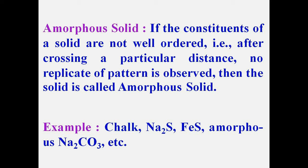What is an amorphous solid? If the constituents of a solid are not well-ordered — that is, after crossing a particular distance, no replication of pattern is observed — the solid is known as an amorphous solid. For example: chalk, sodium sulfate, ferrous sulfate, amorphous sodium carbonate, etc.